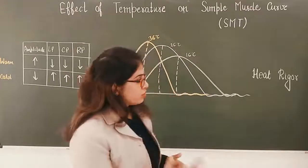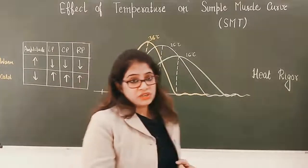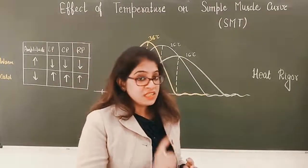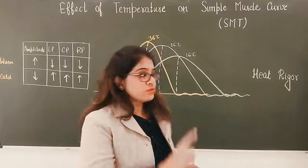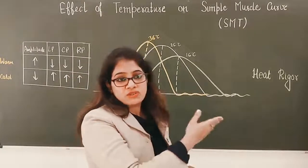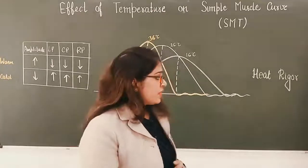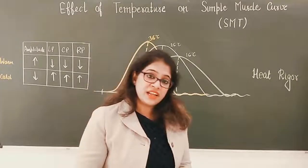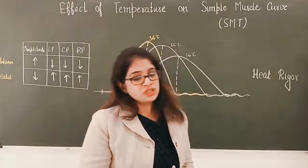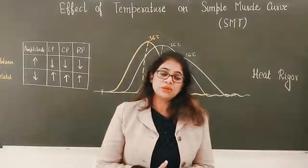These are all questions your examiner may ask. The most important question is to identify the graph, then explain why it occurs — the cause for the raising of the graph and the change in duration of different phases. Then the examiner may ask what is heat rigor and what is rigor mortis. This is all about the effect of temperature on the simple muscle curve.